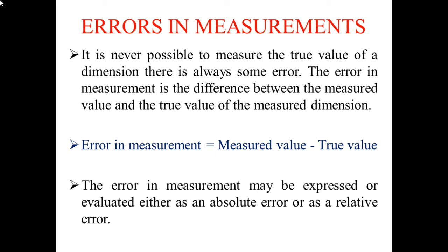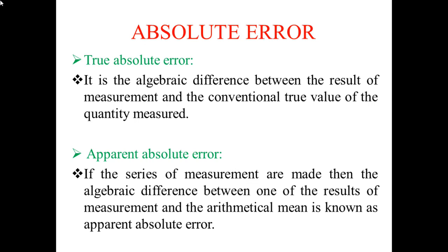Moving on to absolute error: The first type is true absolute error. It is the algebraic difference between the result of measurement and the conventional true value of the quantity measured.